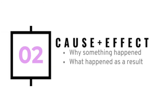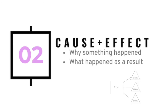A cause and effect text structure explains why something happened — the cause — and what happened as a result — the effect. Cause and effect text structure can be utilized to show how two topics are directly related.